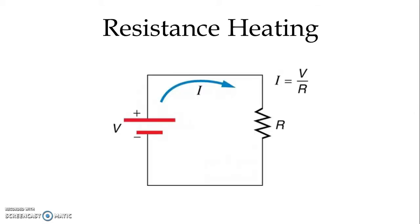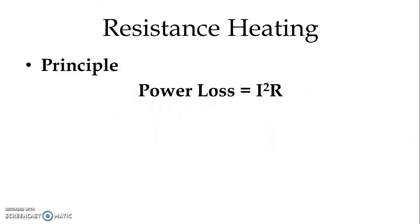In a circuit, when we apply any voltage to the resistance, current I will be passing through the resistance. The value of the current I is equal to V, that is voltage, divided by resistance R. Current is inversely proportional to the resistance. And when current passes through the resistance, the power loss will be I squared R, and this power loss will be converted into heat.